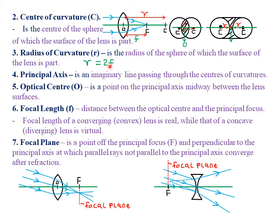This is the same case for concave mirrors and convex mirrors, as we looked at in the topic of reflection at curved surfaces in form two. Our fourth definition is what we call the principal axis, which simply refers to an imaginary line passing through the centers of curvatures. You can see this particular line passing through this center of curvature and also through this center of curvature. This imaginary line connecting the centers of curvatures is what we call the principal axis.